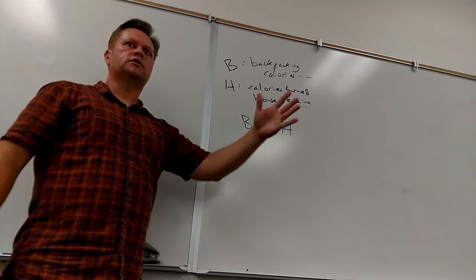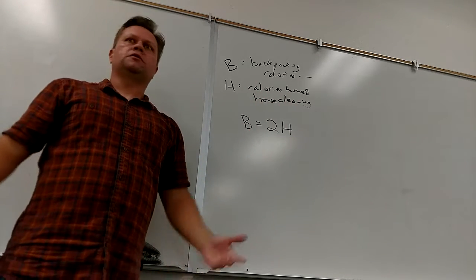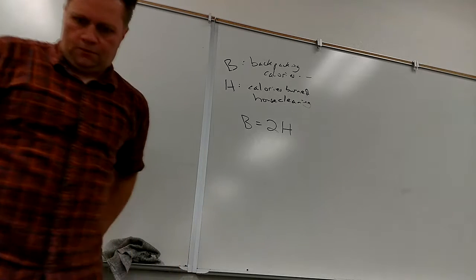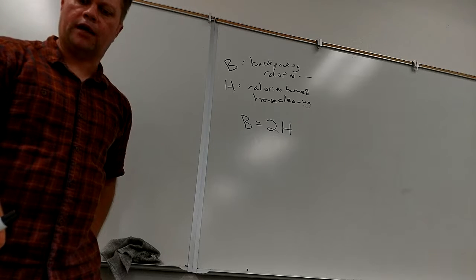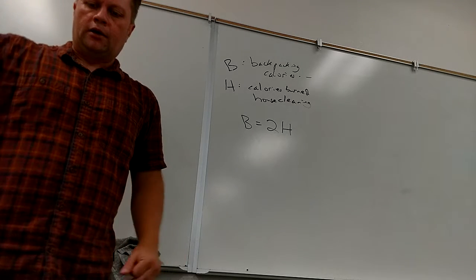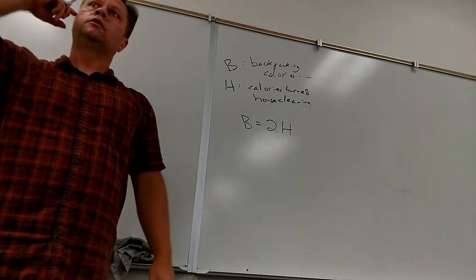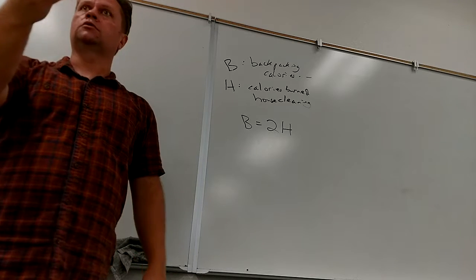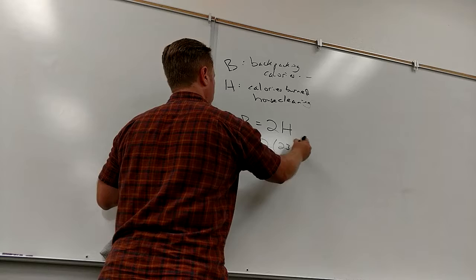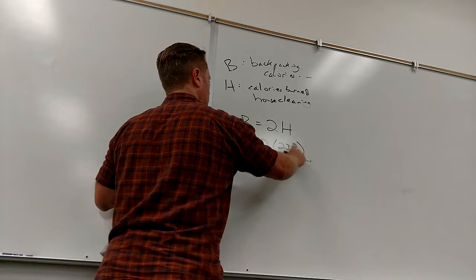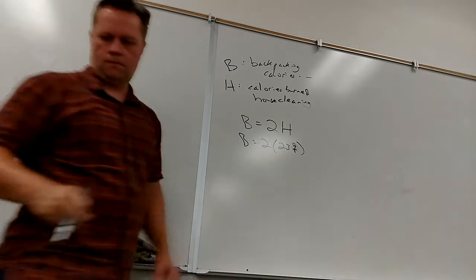I like it. And now I can just plug in the number. They said don't solve. I have no idea why not. But where would the 237 go? Katie burned 237 calories per hour house cleaning. So it goes in for the H. It's supposed to be B equals twice, what was it, 237? Yeah.